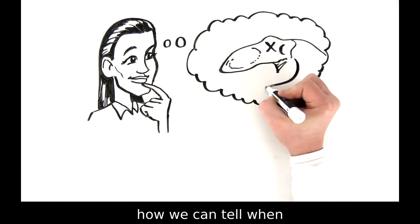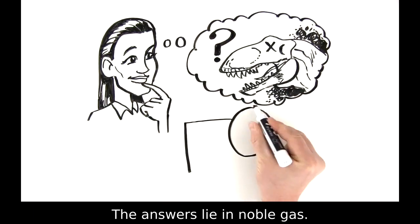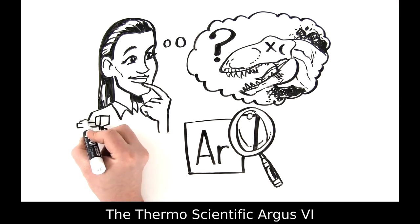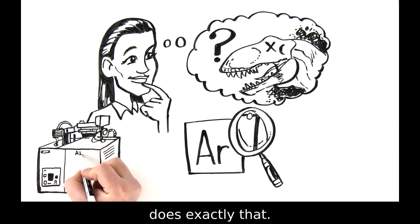Have you ever asked yourself how we can tell when the dinosaurs went extinct? The answers lie in noble gas. The thermoscientific Argus 6 noble gas mass spectrometer does exactly that.